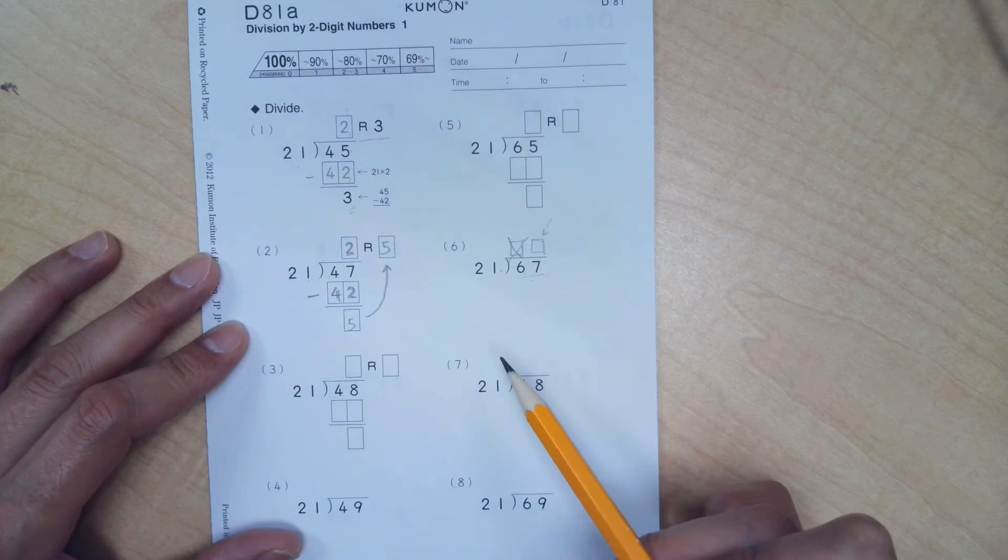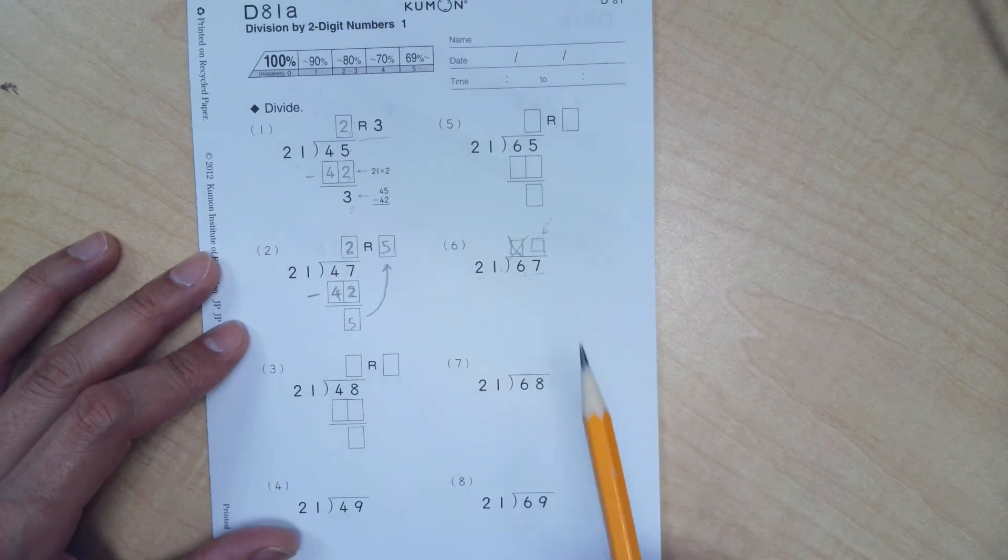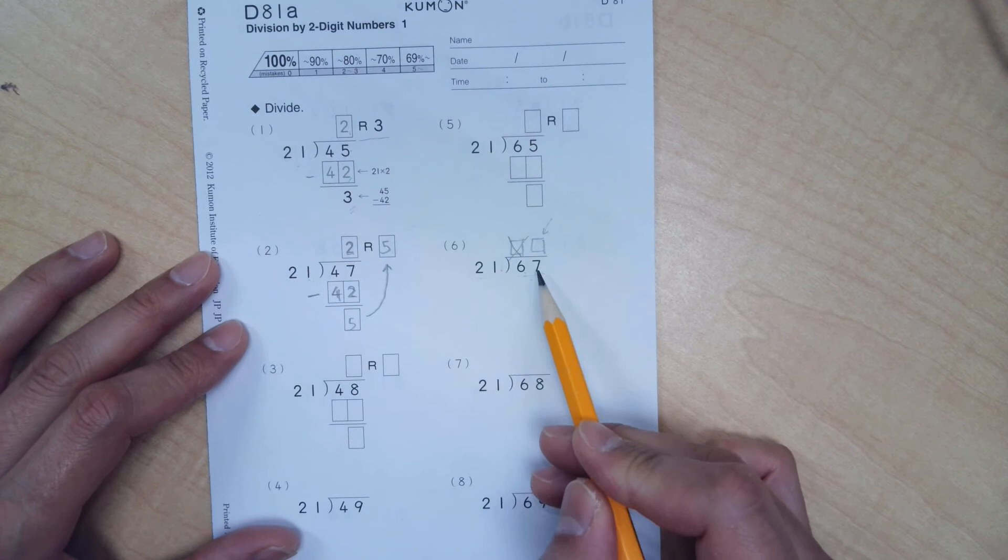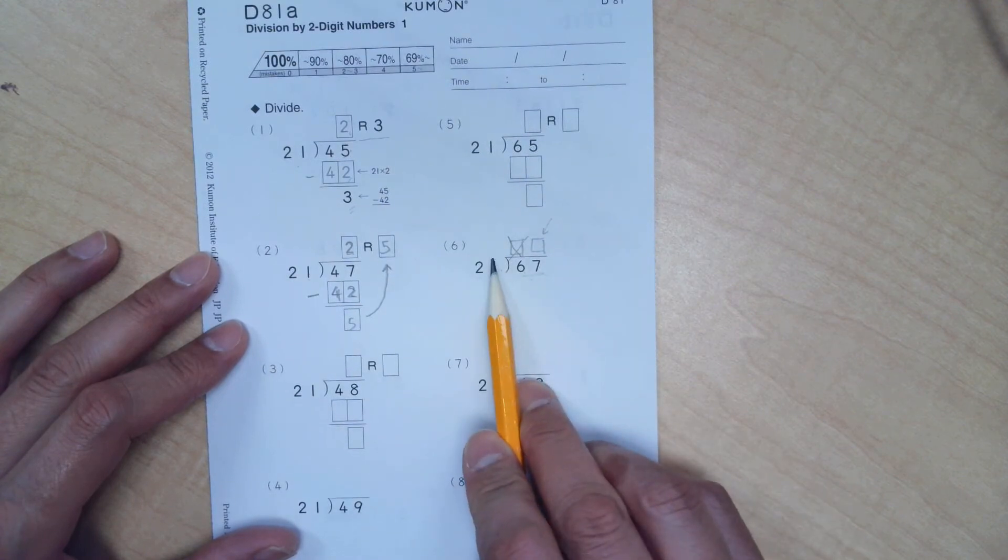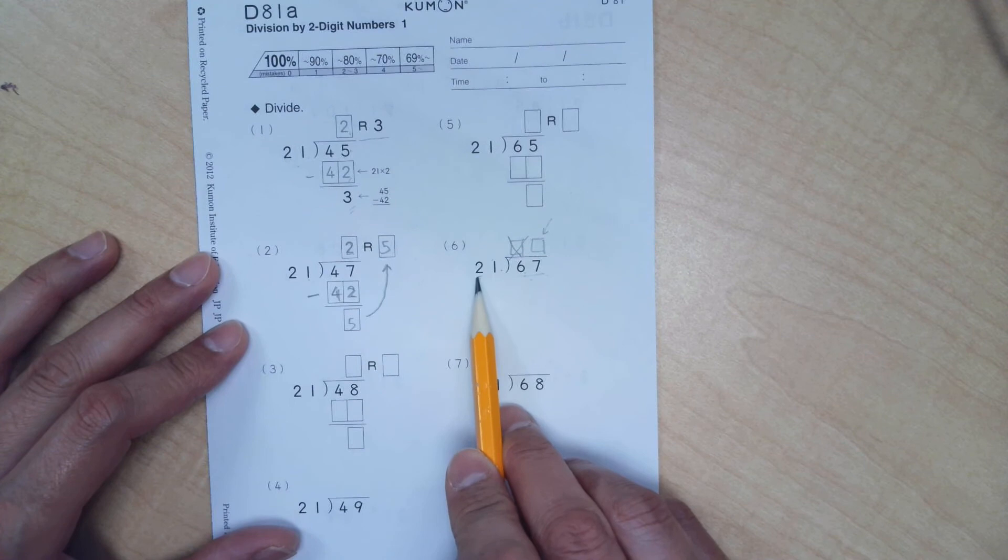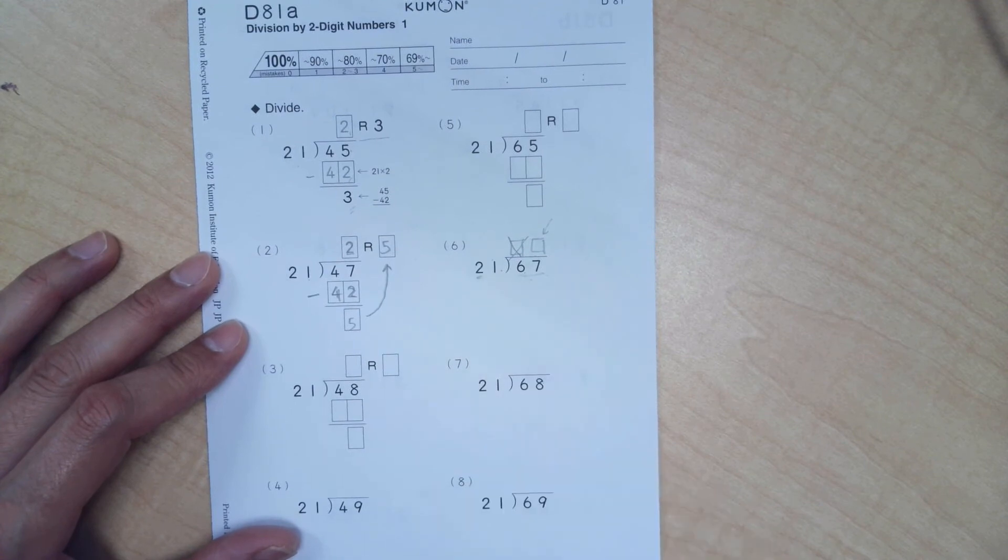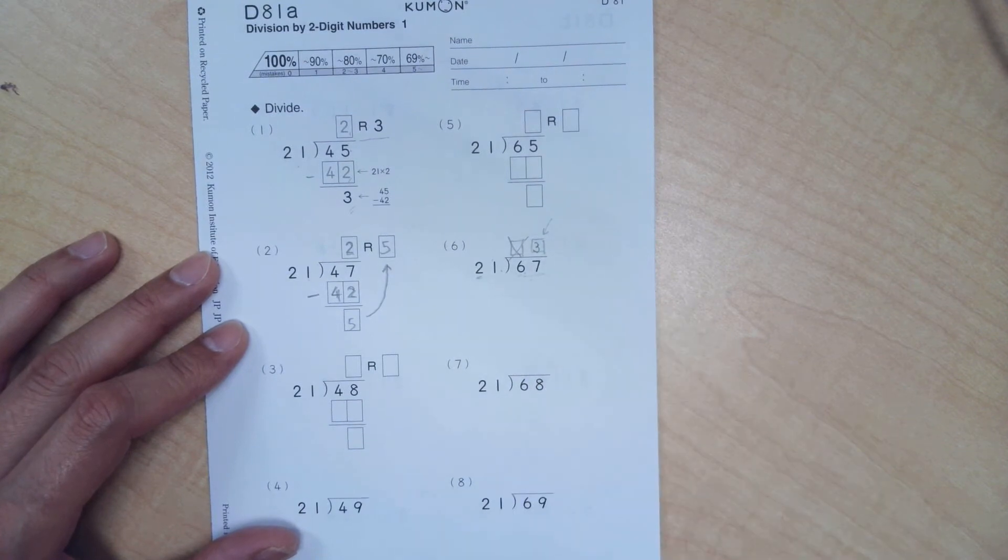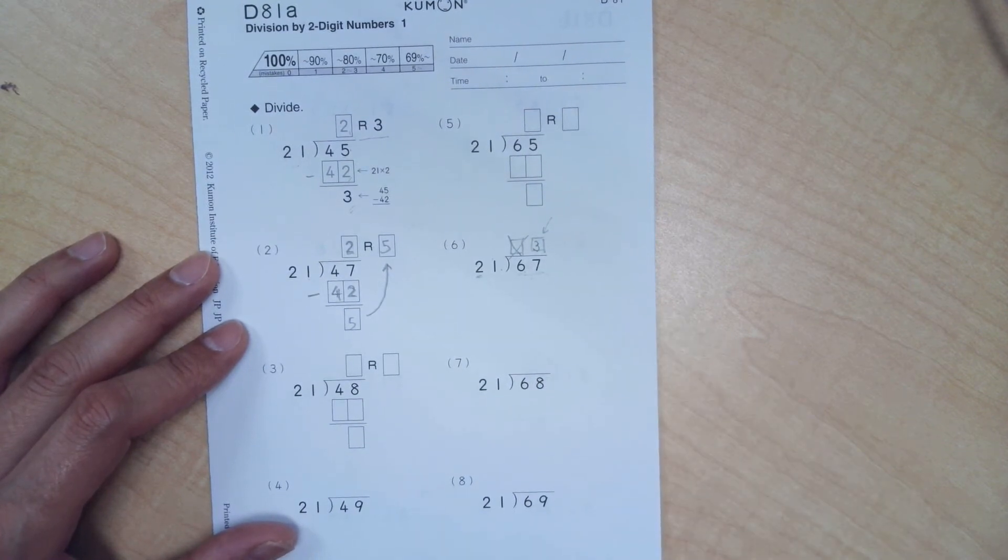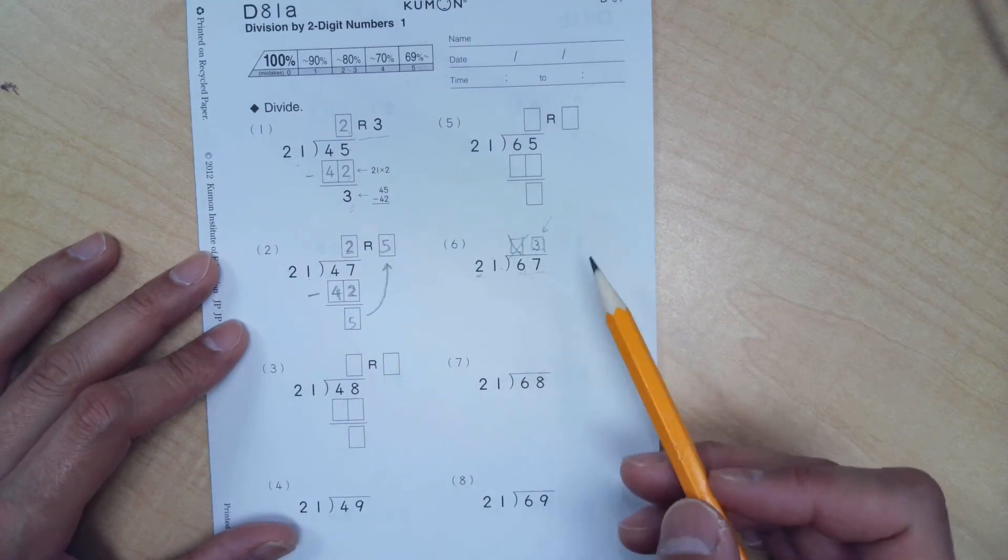And this is where we need to estimate. If you cannot multiply your 21 quickly in your head, then you can say, let's see. Let's imagine that we can cover the number 7 here and cover number 1 here. And ask yourself, how many times can 2 go into a 6? And that's about 3. So let's see what happens when we put 3 up here. And this is an estimate. When you estimate, sometimes you're right and sometimes you're close but not right. Let's see if we got right here.